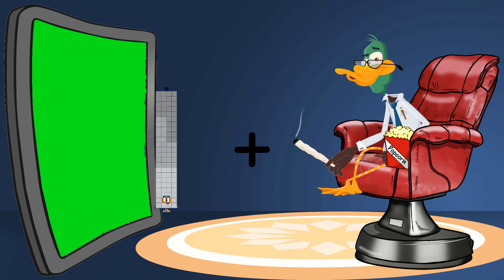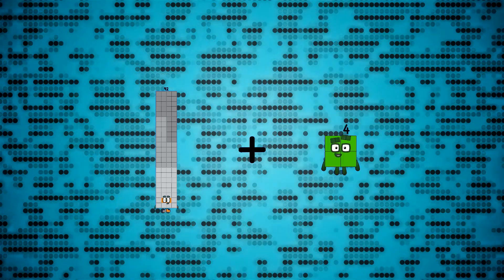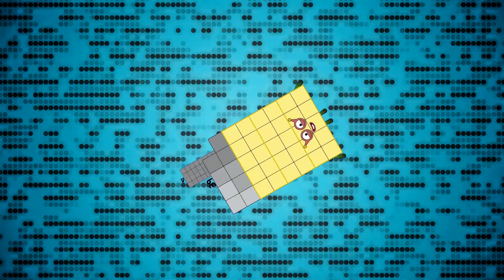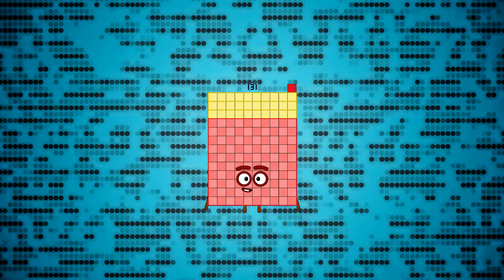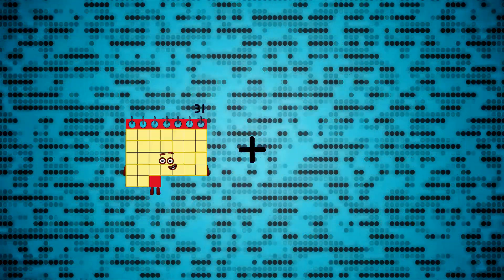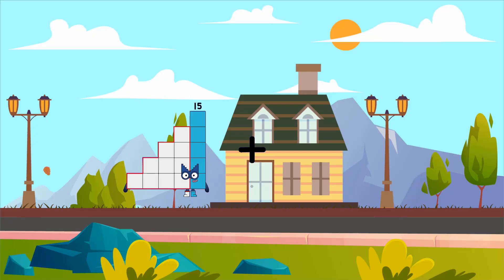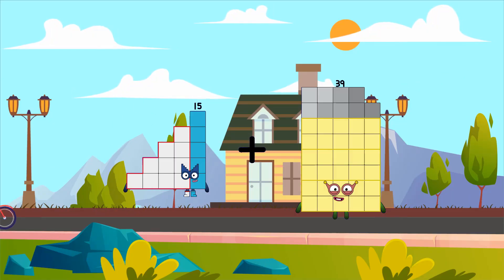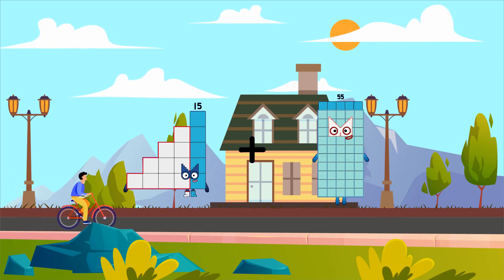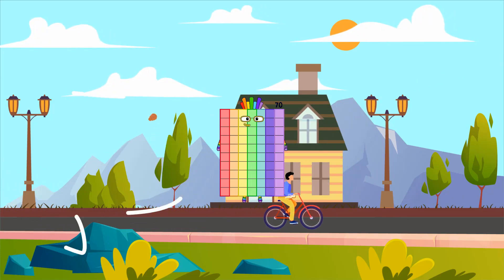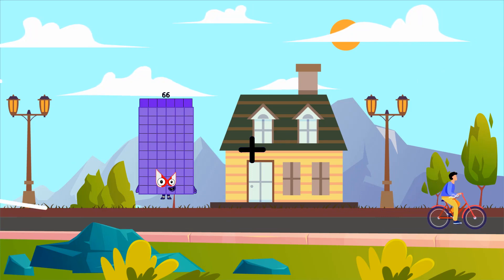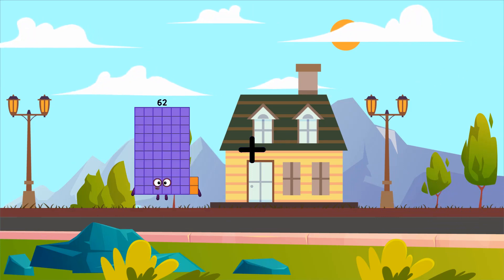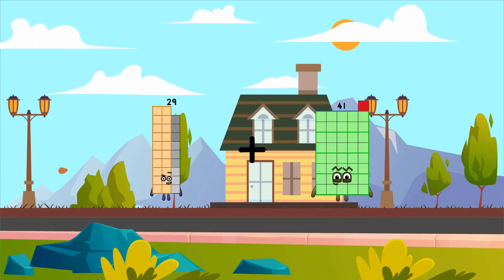92 plus 39 equals 131, 15 plus 55 equals 70.